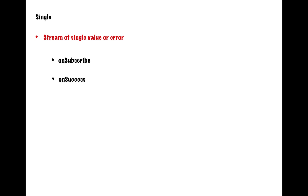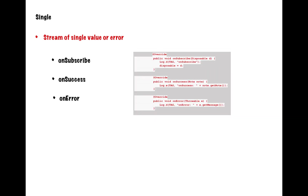The next part is single. For Android developers, this is mostly what we use. What we do on a daily basis is make an API call and get a certain amount of data, and we know how the data will be. Every time you feel that there will be only one single data you will be getting from the API, make sure to use single. Once the subscription has been achieved between observer and observable, the onSubscribe callback will come. onSuccess signifies that the data has been absorbed by the receiver, and onError signifies that there has been an error. The use case is making a network call to get a response where the response will be fixed at once.